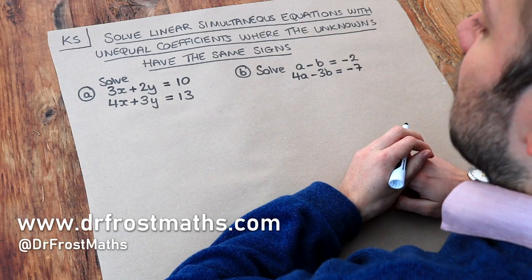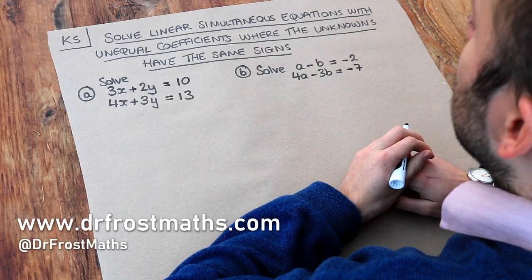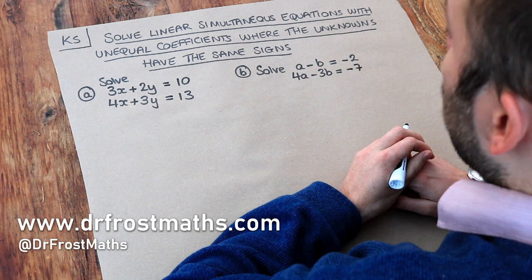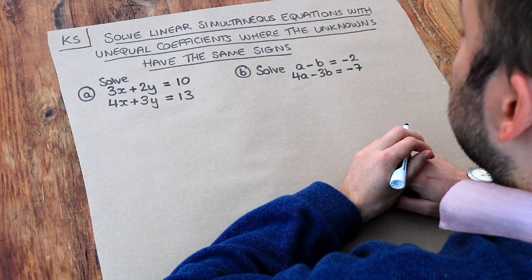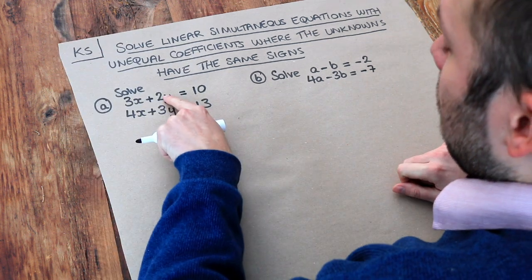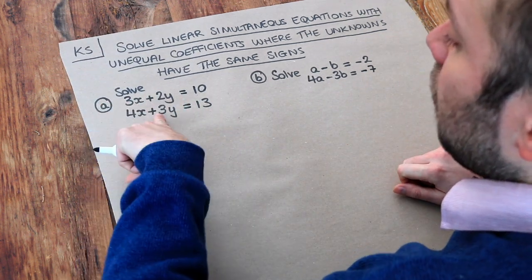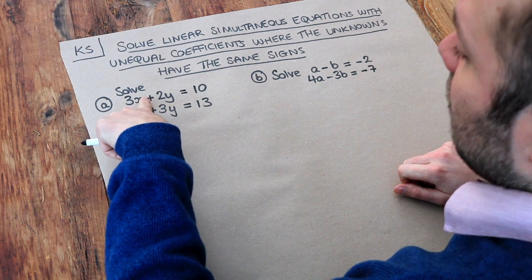Hello and welcome to this Dr. Ross Mass's key skill video on solving linear simultaneous equations with unequal coefficients where the unknowns have the same sign. What I mean by that is, for example, the numbers in front of the y are different numbers, but they have the same sign, so they're both positive. Here we've got different numbers, that's like minus 1, that's minus 3, but they are the same sign.